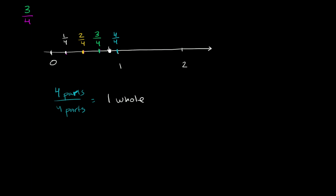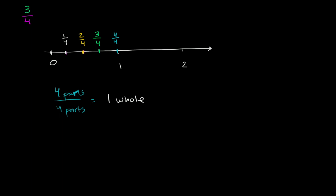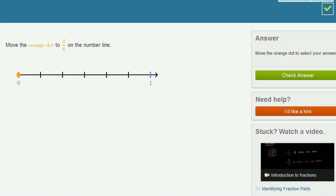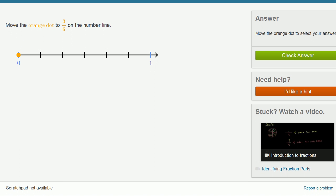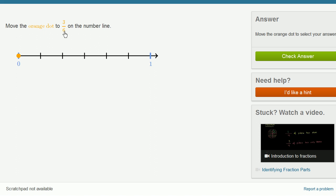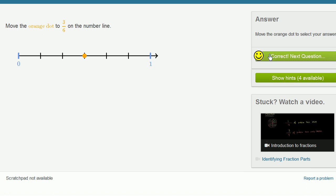So let's do a few exercises with our newfound knowledge of fractions on the number line. So let me get a little exercise going. So here we have, move the orange dot to 3 sixths on the number line. So we already see that they've divided up the space between 0 and 1 into 6 equal sections. 1, 2, 3, 4, 5, 6. So we need to move it to three of those sections. 1, 2, 3. Let's check our answer. Let's do a couple more of these.